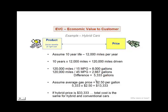We can monetize that difference by assuming an average gas price. Let's pick $2.50 a gallon. Some may think that's too low, some may think it's too high — this is just our starting point for the analysis. Our 5,333 gallons monetized at $2.50 a gallon comes to $13,333. What that then says about what a rational, economically driven buyer would likely spend for a hybrid: since a conventional car was $20,000 and there is $13,333 of gas savings, a rational buyer should be willing to spend up to $33,333 for the hybrid.